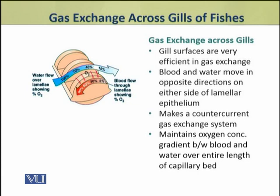Dear students, now we shall discuss the mechanism of gas exchange across the gill surface. Gill surfaces are very efficient in gas exchange. In them, blood and water move in opposite directions on either side of the epithelium of lamellae. This makes a counter-current gas exchange system.